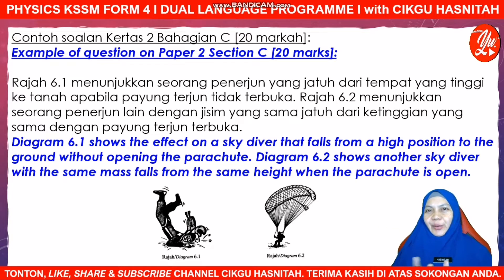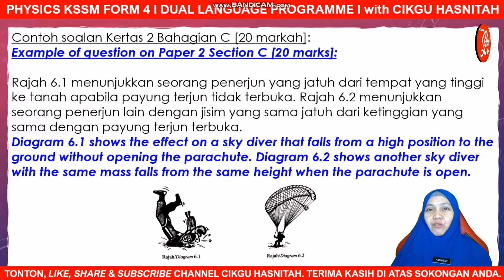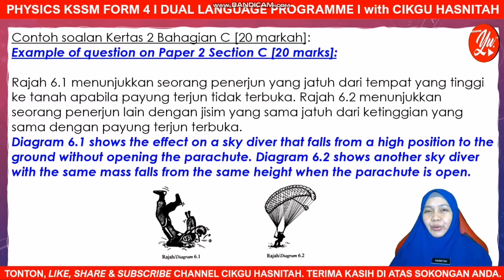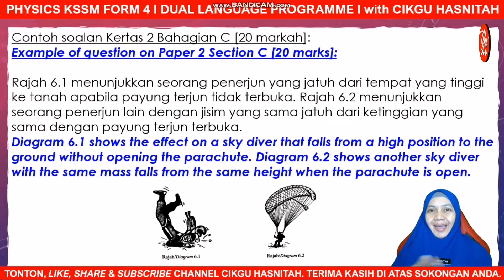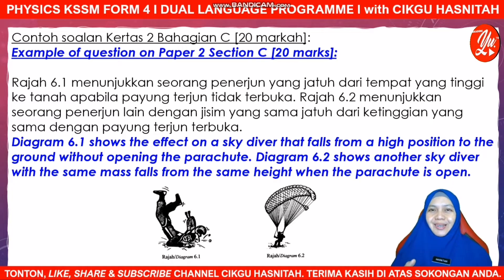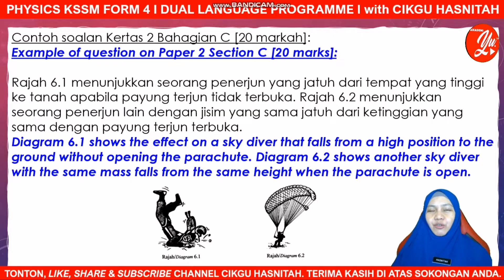So as you are now in Form 4, which means for your SPM 2022, you are going to sit for Paper 1, which consists of 40 objective questions for you to settle in 1 hour and 15 minutes. In Paper 2, there will be 3 sections where Section A has 8 structured questions. Section B has 2 essay questions, each allocating 20 marks, where you can choose to answer any one or both if you have enough time. Section C has 1 mandatory essay question with no choices, also allocating 20 marks — a total of 100 marks for Paper 2 to settle in 2 and a half hours.